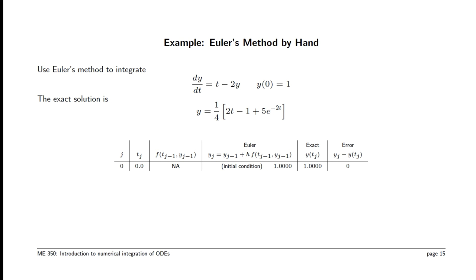I'm going to build up a table here. The first row is the initial condition. And the columns are j, the index of the time, t_j, the time at that index, f is the slope, and the big y column in the middle is the formula for Euler's method that is used to advance our solution. Since we know the exact solution, we can compute it and compare our numerical solution to it via subtraction to get an absolute error.